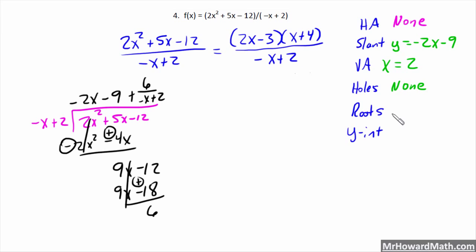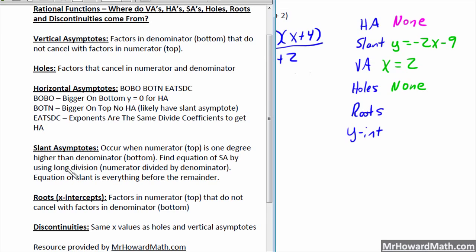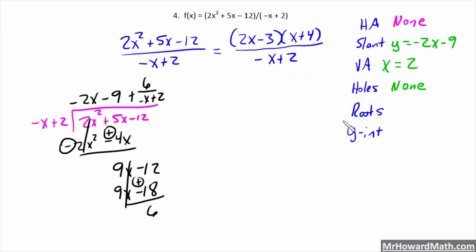Roots. Roots come from factors in the numerator that do not cancel. So, again, look at the list here. Factors in numerator that do not cancel with factors in the denominator give you the x-intercepts, the roots. So, 2x minus 3, we would add 3 and divide by 2. So, that would be x equals 3 halves for this root. You add 3, divide by 2 to solve for x there. Set it equal to 0 and solve. So, x equals 3 halves as a root.